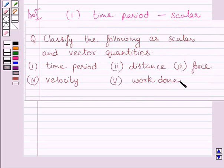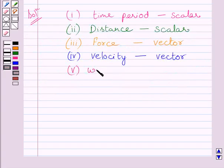Now fifth part is work done. Now work done has only magnitude but no direction. So it is a scalar quantity.